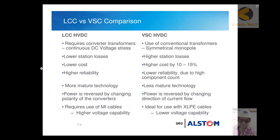In LCC HVDC, power is reversed by changing the polarity of the converter voltages, meaning you must completely change polarities from station A to B. In VSC HVDC, power flow direction is reversed by changing the direction of current flow — no need to change the voltage polarity. LCC HVDC requires the use of MI cables with higher voltage capability, whereas VSC HVDC is ideal for use with XLPE cables but has lower voltage capability. This concludes the basic comparison between LCC and VSC converters.